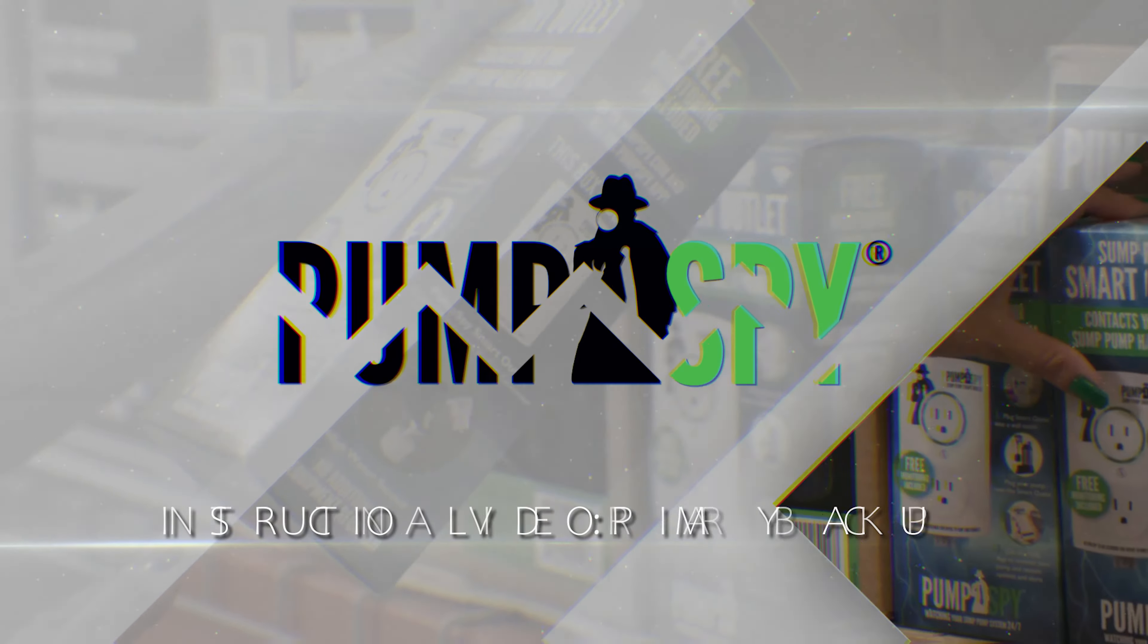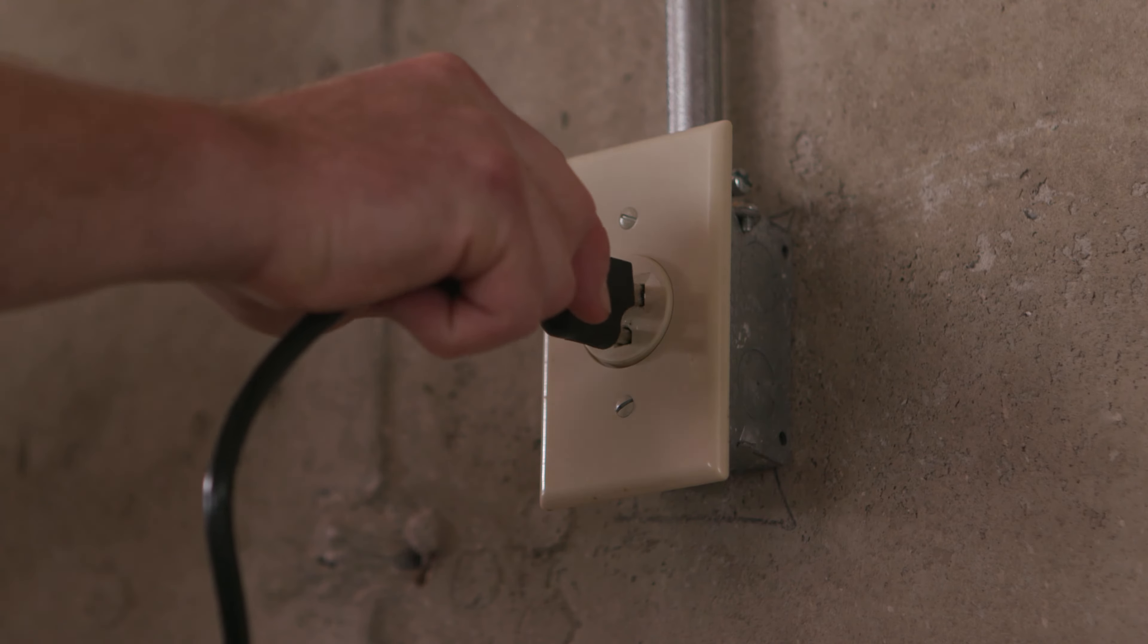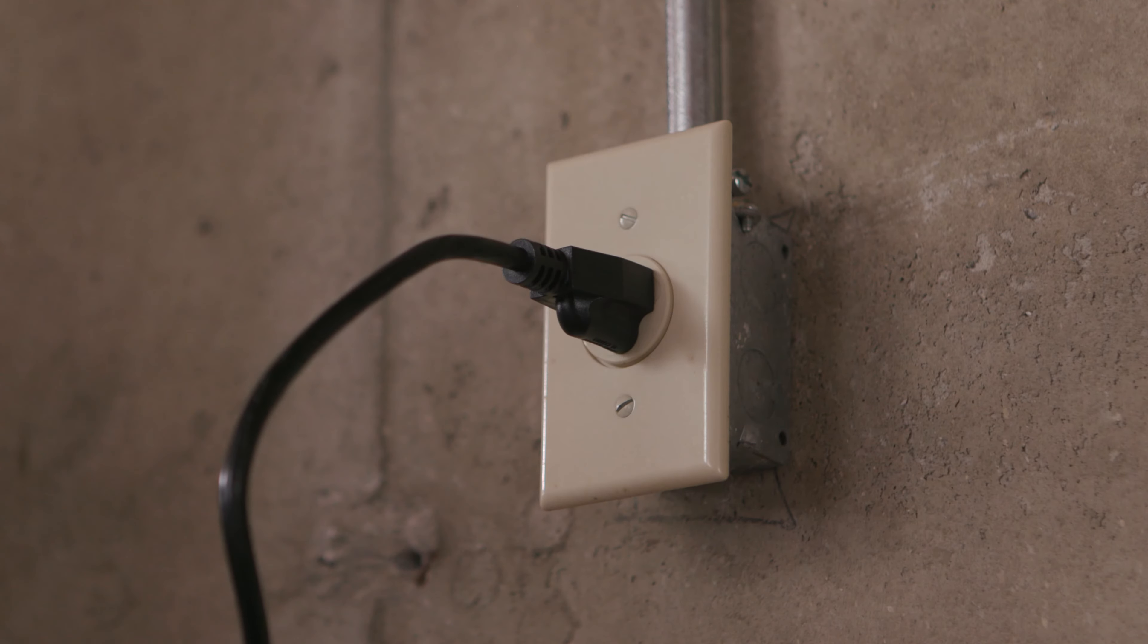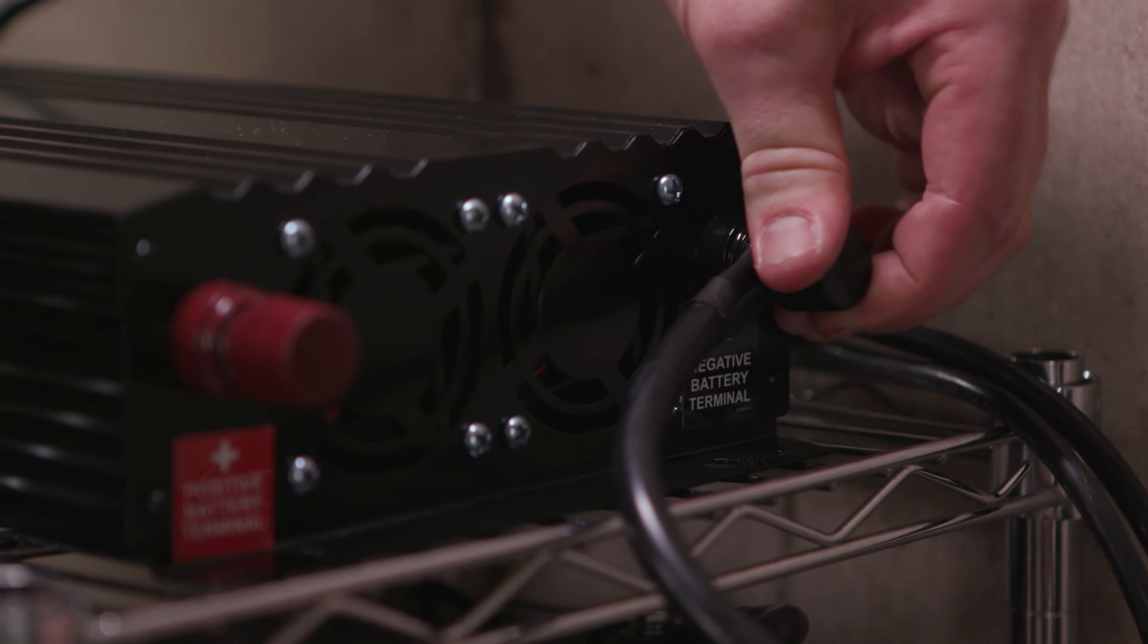Welcome to PumpSpy's primary backup power system installation video. Begin by confirming both the power switch and the charger switch are in the off position. Then, connect the backup power system to AC power.